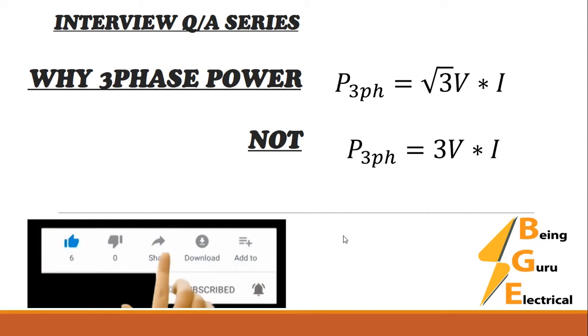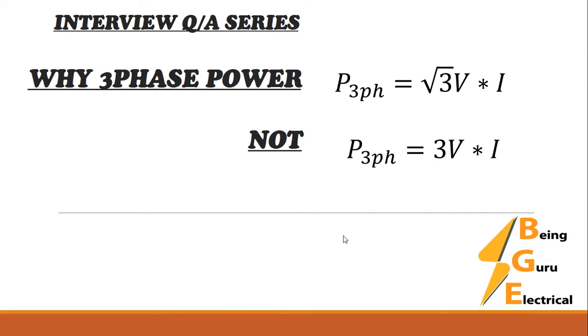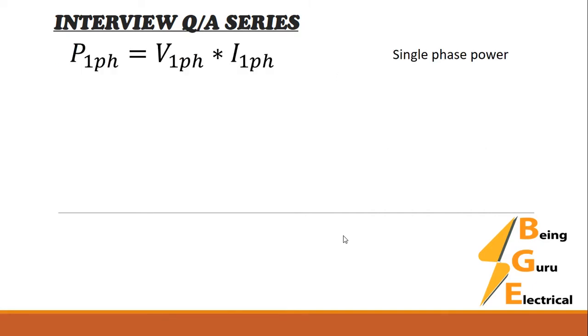We'll start with the single phase power formula: single phase power equals single phase voltage times single phase current. What we will do is multiply both sides by 3.